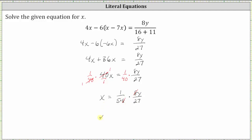And now we multiply. In the numerator, we have one times y, which is y. In the denominator, we have five times 27, which is equal to 135.